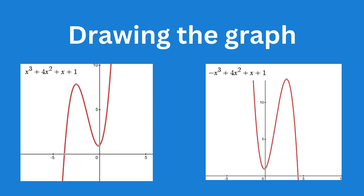Notice the distinct shape and the turning points where the graph changes direction. Also notice that these two functions have identical terms, except the x cubed is positive on the left and negative on the right.